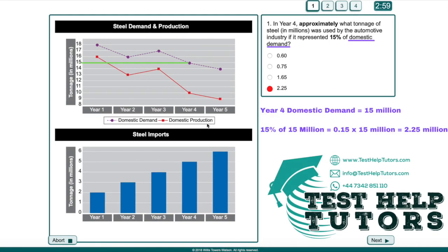I hope you've had a go. In year 4, approximately what tonnage of steel in millions was used by the automotive industry if it represented 15% of domestic demand. Here we have the domestic demand curve in purple. In year 4, we can see that the value for the demand was 15 million.